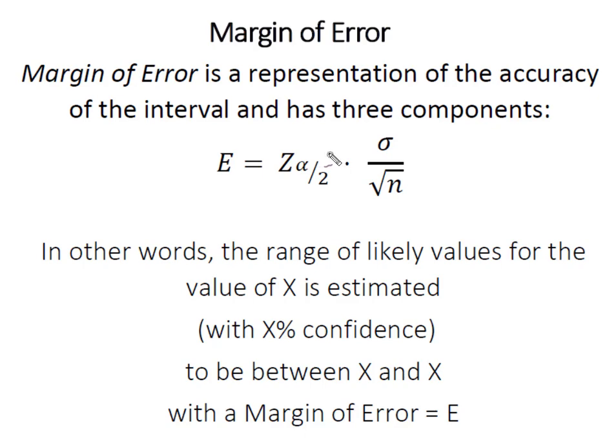Firstly it has our level of confidence which is represented either by our Z alpha or our T alpha divided by 2. It's the number of standard deviations we need to move from our point estimate in order to construct the interval of interest.